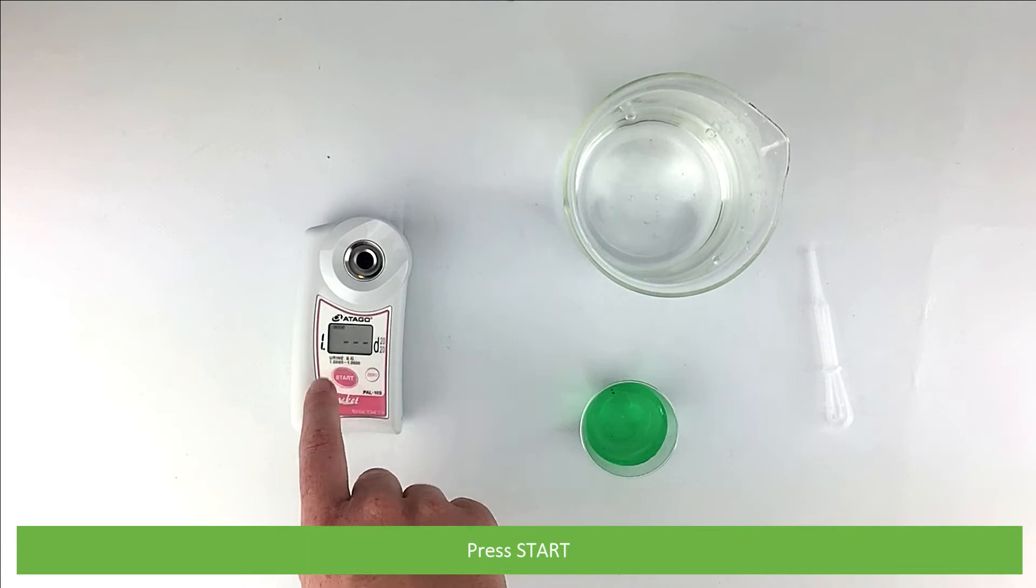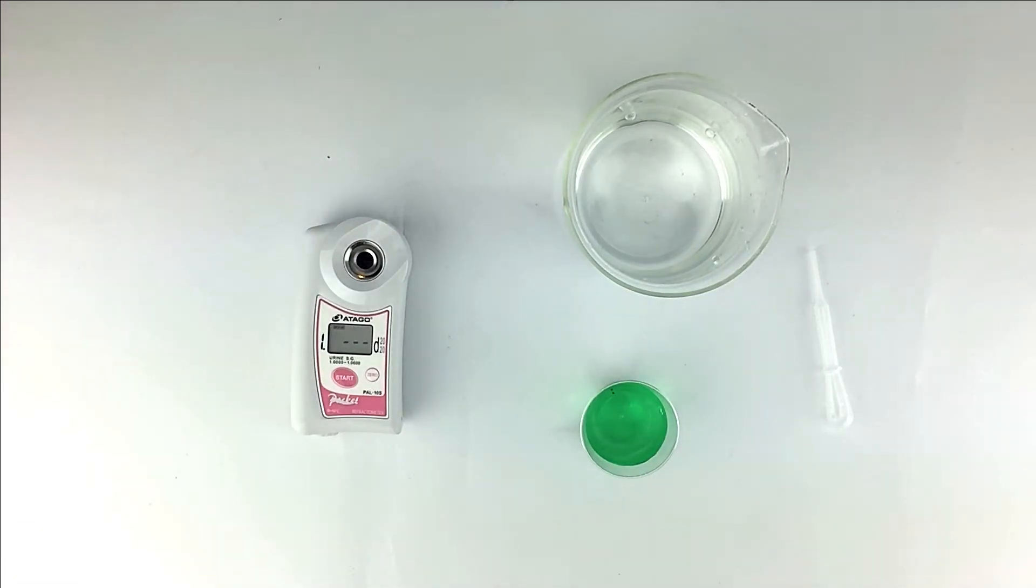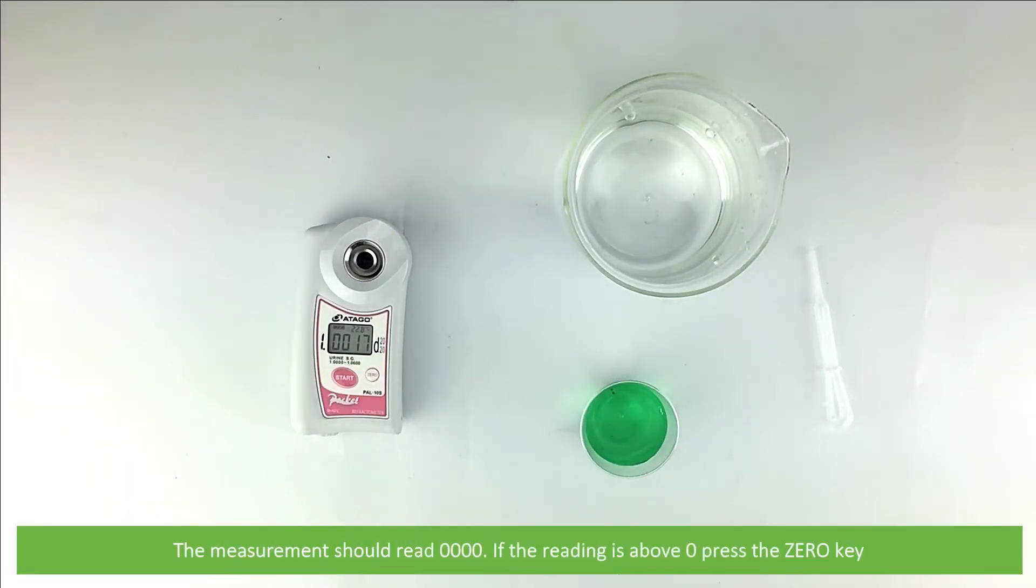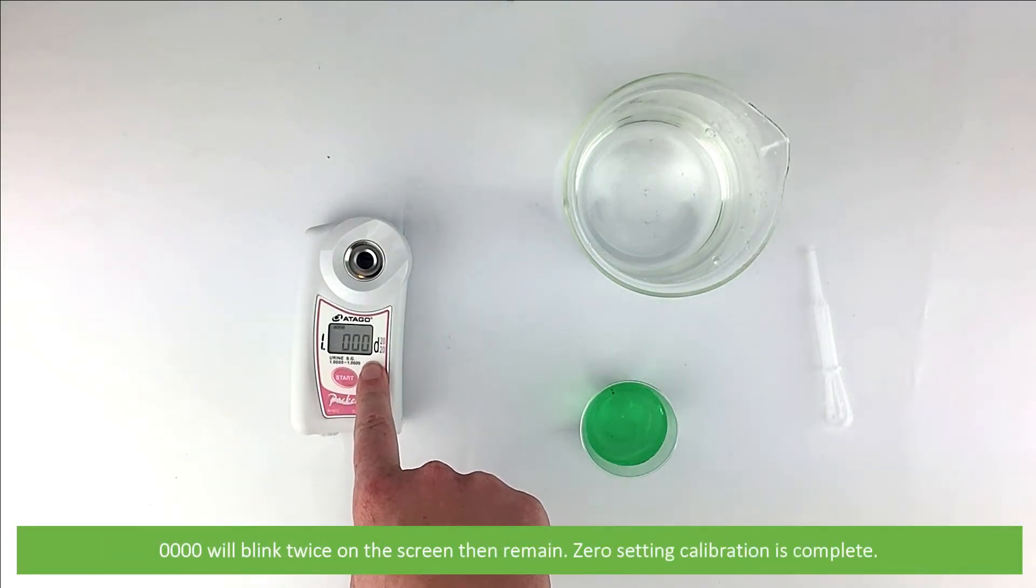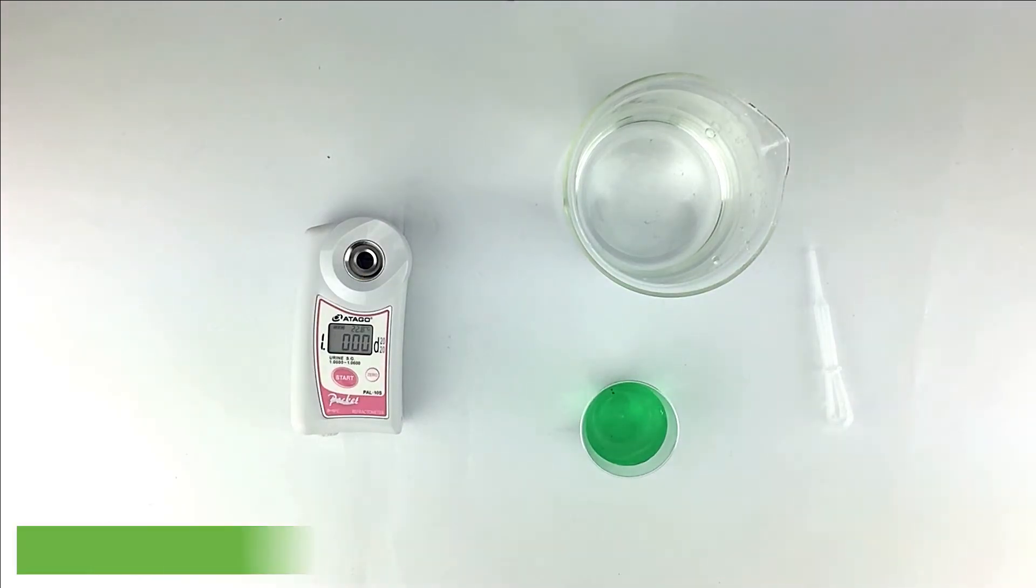Press Start. The measurement should read quadruple zero. If the reading is above quadruple zero, press the zero key. Four zeros will blink twice on the screen, then remain. The zero setting calibration is complete. Wipe the prism clean.